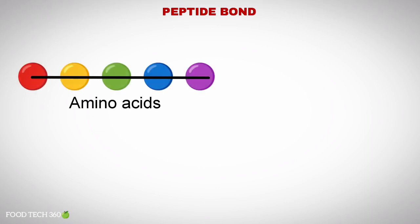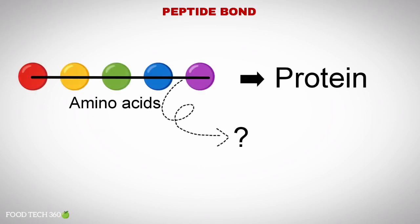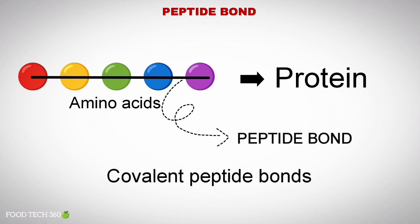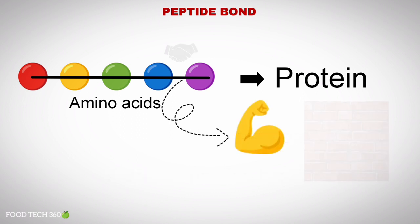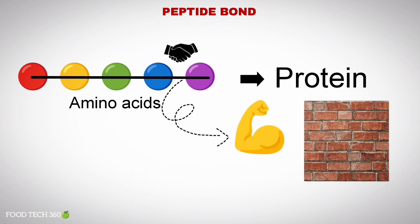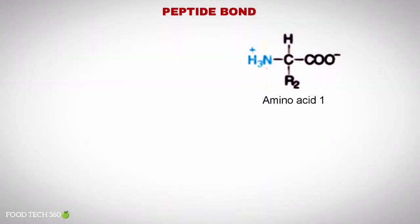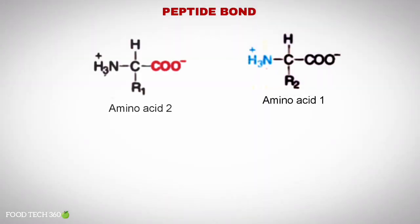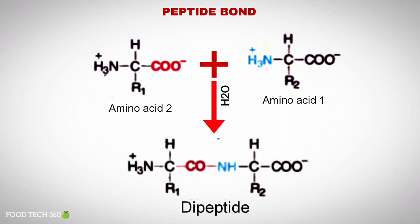We know that amino acids are building blocks of protein, but which bond is linked between the amino acids? That's the peptide bond. The amino acids are held together in a protein by covalent peptide bonds or linkages. These bonds are rather strong and serve as a cementing material between individual amino acids. When the amino group of an amino acid combines with the carboxyl group of another amino acid, a peptide bond is formed.